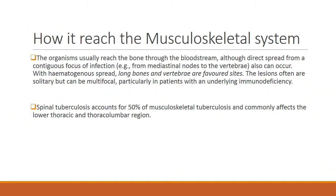How does TB reach the musculoskeletal system? Mycobacterium tuberculosis usually reaches the bone through the bloodstream, although direct spread can also occur. The long bones and vertebrae are favoured sites for haematogenous spread.